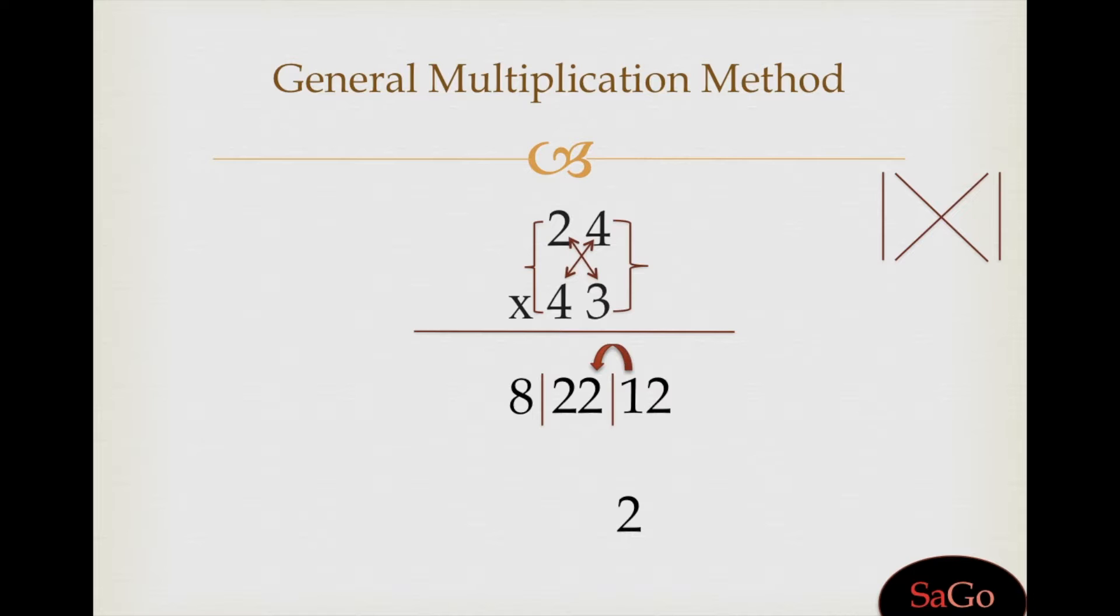Now add digits in pairs: 1 plus 2 is 3, write 3; 2 plus 8 is 10, write 10. 1032 is the answer.